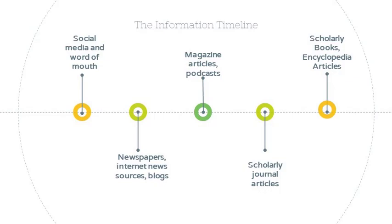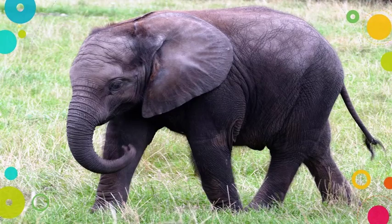Let's look at an example. Let's say that an adorable baby elephant is born at the zoo. Perhaps the elephant was born premature, but she beats the odds and pulls through. What's more, she has a sassy personality and an adorable name, like Eloise.